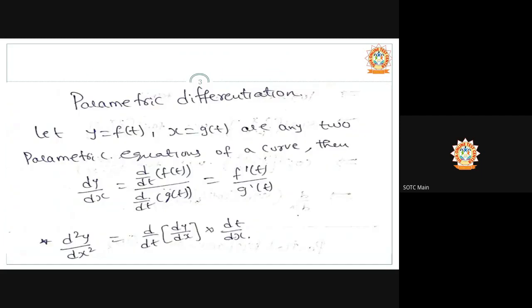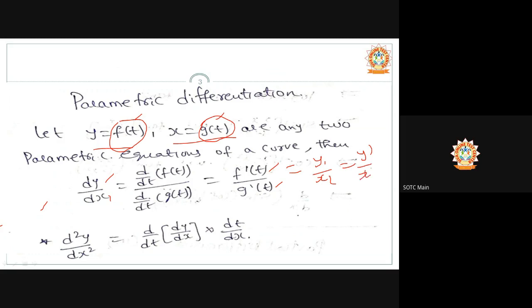Parametric differentiation will definitely gain one mark — it's a very simple and easy chapter. Let y = f(t) and x = g(t); both are functions of t — these are two parametric equations of a curve. Then dy/dx equals [d/dt of f(t)] divided by [d/dt of g(t)], that is f'(t)/g'(t), also written as y₁/x₁ or y'/x'.